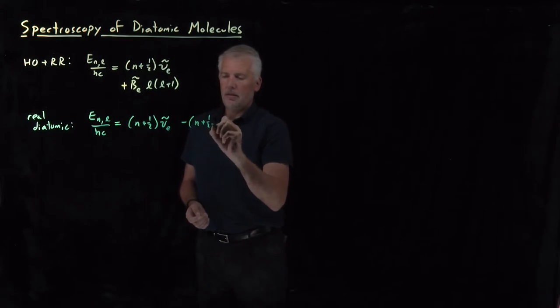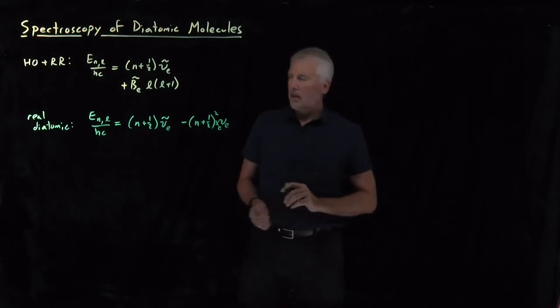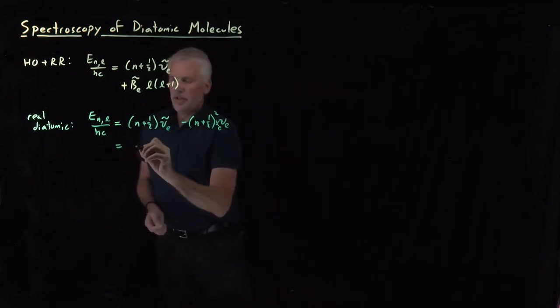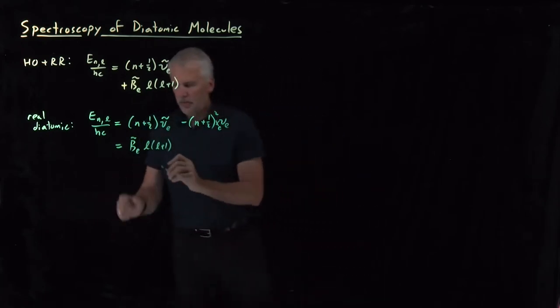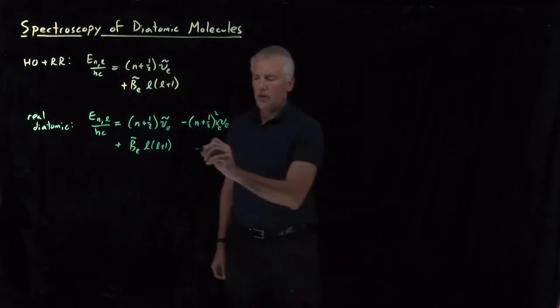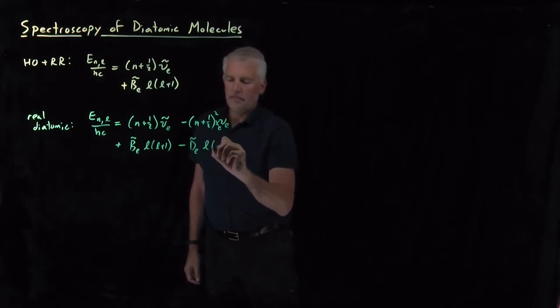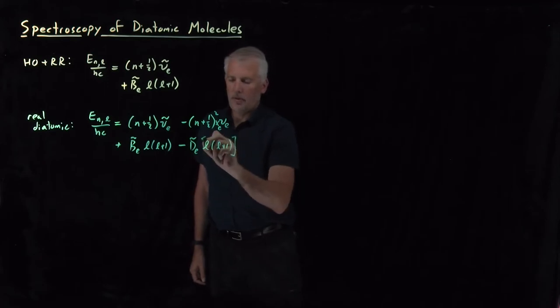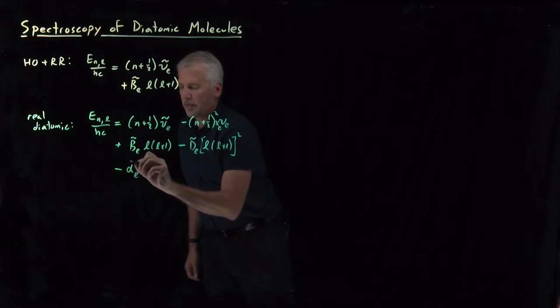The rotational energy looks like the energy that we get from the rigid rotor minus a correction that comes from the centrifugal distortion. L and L plus 1 both squared. And we also have a correction that comes from the coupling between the vibrational and the rotational motions.